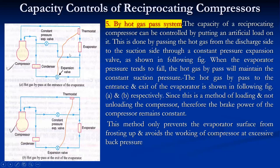If the defrosting mechanism is already available, the same mechanism can be used for capacity control of the compressor. However, there is no power saving with this method — the compressor extracts the same power as at full capacity. It is only recommended when load fluctuation is 10–15%; for variations more than 30–40%, other mechanisms should be adopted. This method only prevents the evaporator surface from frosting up and avoids the compressor working at excessive back pressure.